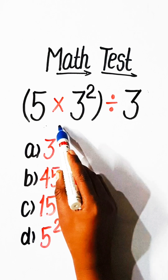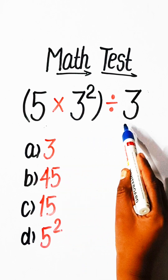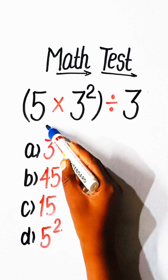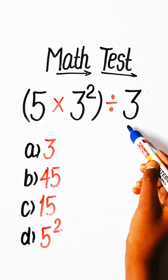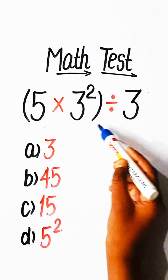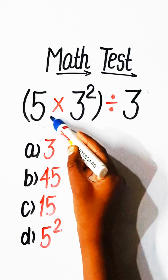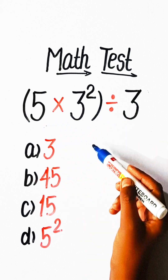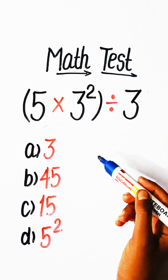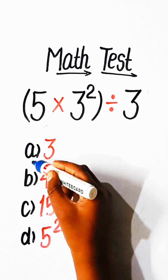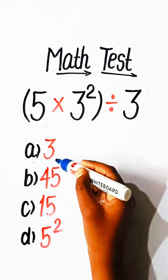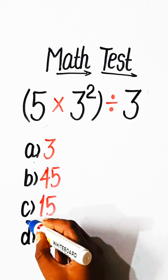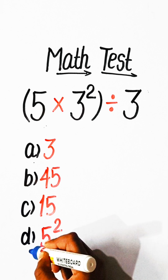Hello everyone, welcome back to my YouTube channel. In this video we will solve this basic math equation: 5 multiplied by 3 squared, divided by 3 — equals what? Option A: 3, Option B: 45, Option C: 15, or Option D: 5 squared.